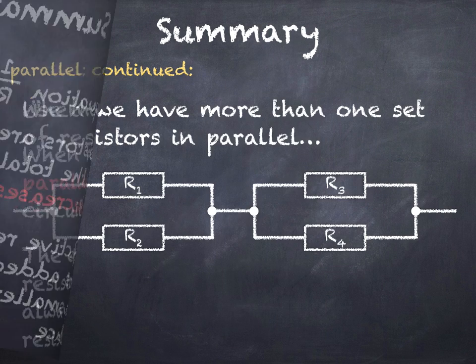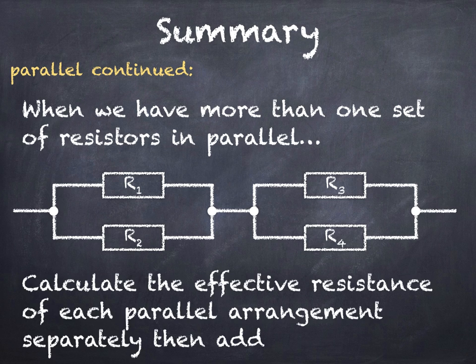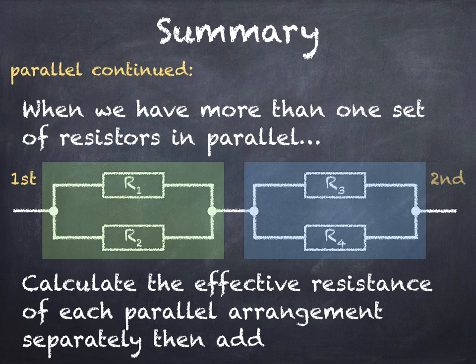Now when we have more than one set of resistors in parallel what we need to do is calculate the effective resistance of each parallel arrangement separately and then add them. So in this example we find the effective resistance of R1 and R2 then the effective resistance of R3 and R4 and then just add the two values. This will be explained in one of the examples videos so look out for that one.